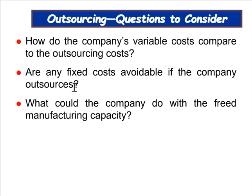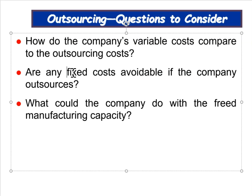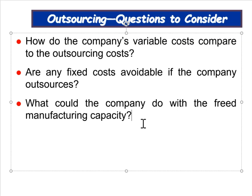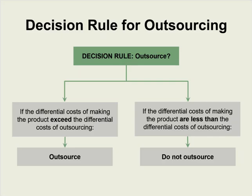Questions to consider: How do variable costs compare to outsourcing costs? Are any fixed costs avoidable if the company outsources? What could we do with the free manufacturing capacity — if we can make something more profitable, that's a good incentive to purchase outside. The basic decision rule: if the differential costs of making exceed the differential cost of outsourcing, outsource; if making is cheaper than outsourcing, continue to make it in-house.